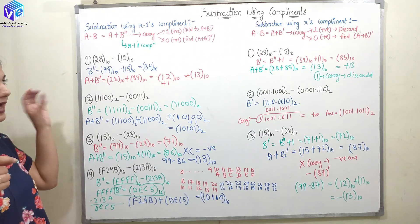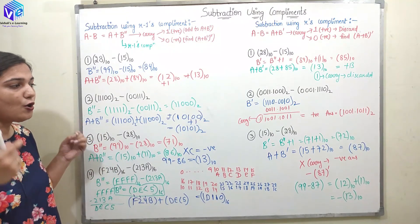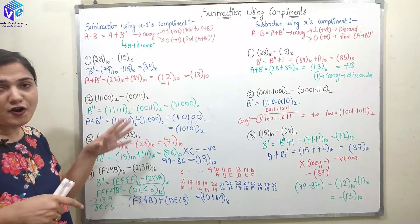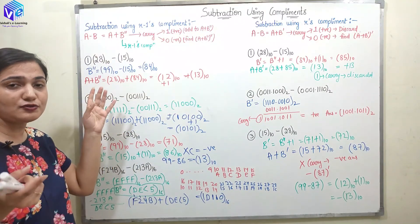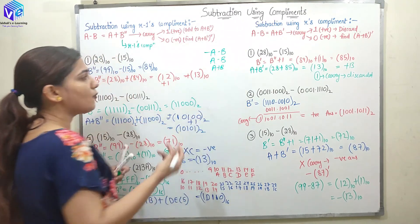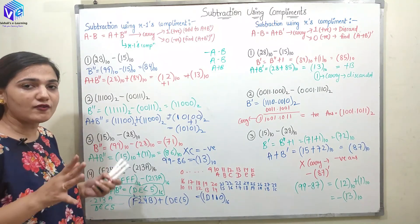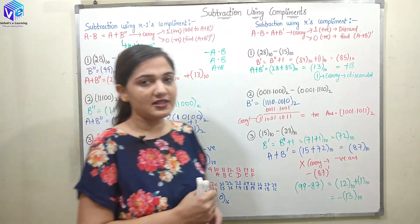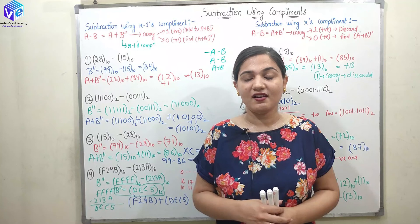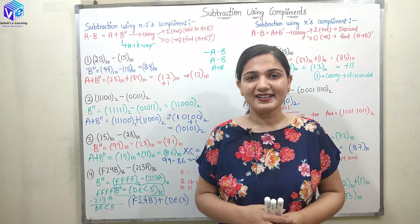Here we have understood how to apply the R's complement and R minus 1's complement to find out the subtraction. In the next video, we are going to see how we can find out the overflow condition — when overflow occurs and when it does not, for operations like A plus B, A minus B, and minus A minus B. I hope you understood everything discussed in this video. If you have any doubt, put it in the comments and I will try to resolve it as soon as possible. Please push the like button, subscribe to the channel, share it with your friends, and give me your feedback. Thank you so much.